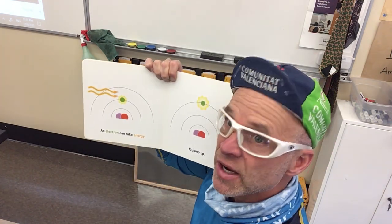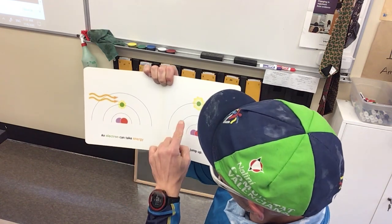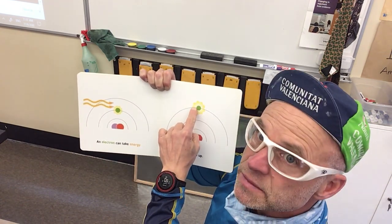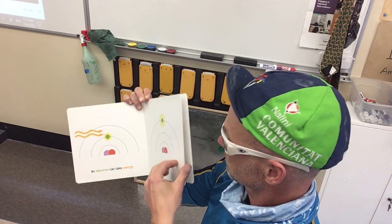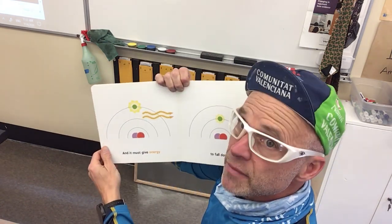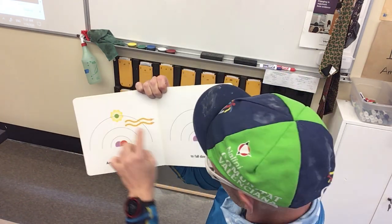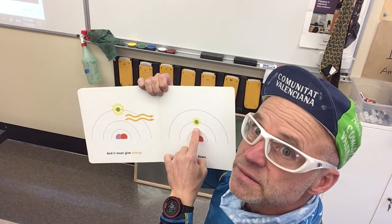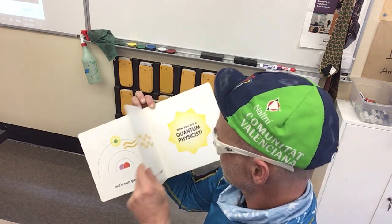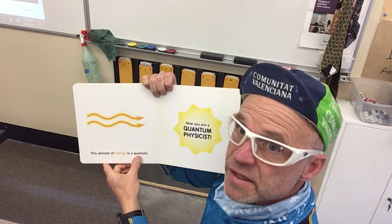An electron can take energy to jump up. And it must give energy to fall down. This amount of energy is a quantum.